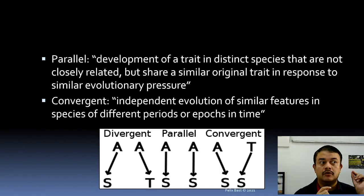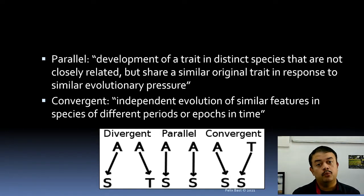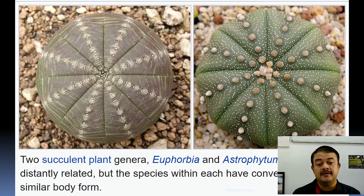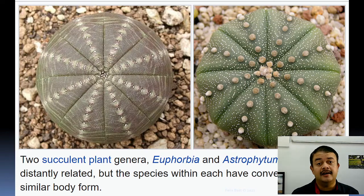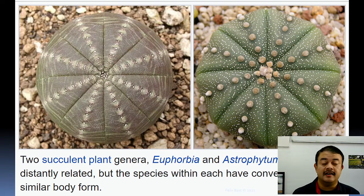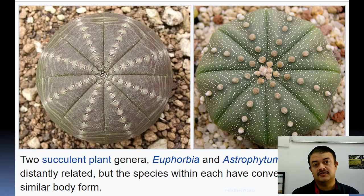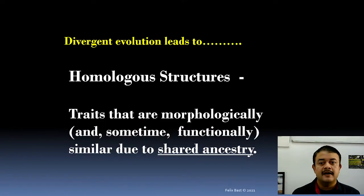For example, insects and birds both develop wings for flight, but looking deeply there is no similarity — insect appendages are very different from bat wings or bird wings. Another example: the succulent plant genera Euphorbia and Astrophytum are quite unrelated but have similar radially symmetrical body forms because both live in arid environments. In response to the same environmental pressure, these unrelated lineages evolved similar characteristics — that is convergent evolution, producing analogous traits and homoplastic sequences.